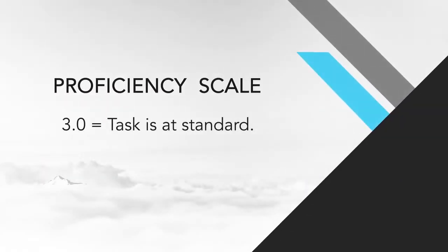So what are the qualifiers? 3.0 on a proficiency scale means that task or question is at standard — exactly what the standard says is in that task. For example, if the standard says the child has to add, subtract, multiply, and divide with fractions, then a 3.0 item has parts A, B, C, and D where they add, subtract, multiply, and divide with fractions. They're doing everything the standard says. That's a 3.0 item — nothing above, nothing below.